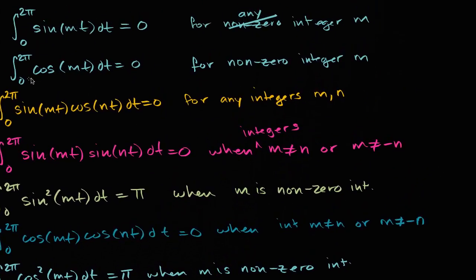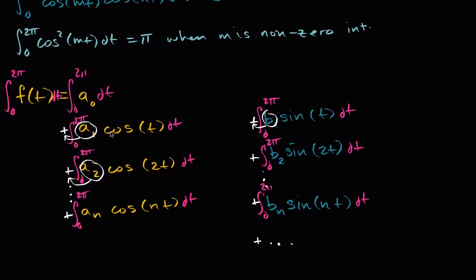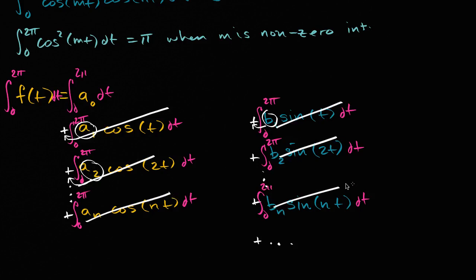We established a couple of videos ago that the integral from zero to two pi of cosine of some non-zero integer multiple of t dt is always equal to zero. The same thing is true for sine of mt. So every term is going to be zero — a sub one times zero, a sub two times zero, and so on — every term vanishes except for the one involving a sub zero.